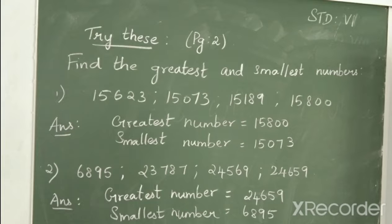First one: 15,623, 15,073, 15,189 and 15,800. Here the first two digits on the leftmost position happen to be the same, so we have to look at the next digit. The next digits are 6, 0, 1 and 8. Among 6, 0, 1 and 8, the digit 8 is the greatest. So the greatest number will be 15,800 and the smallest number will be 15,073.